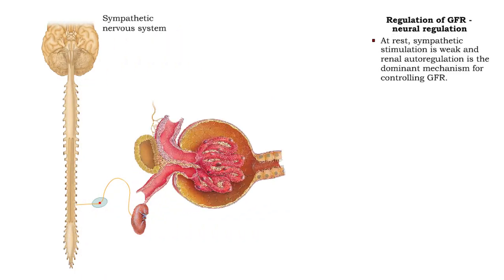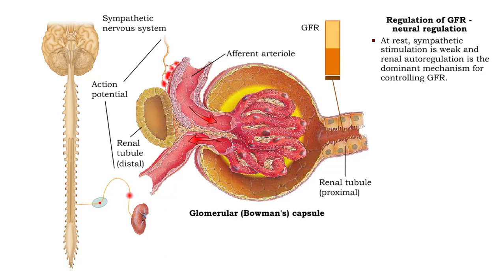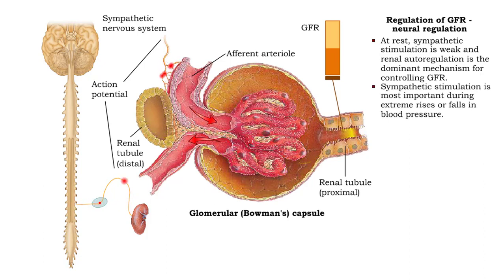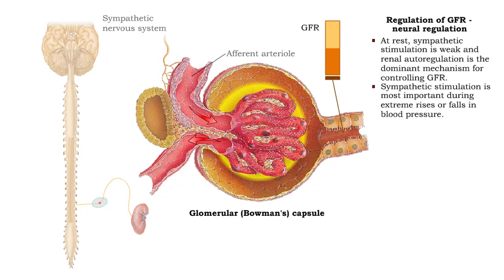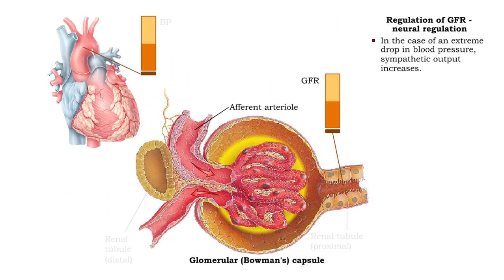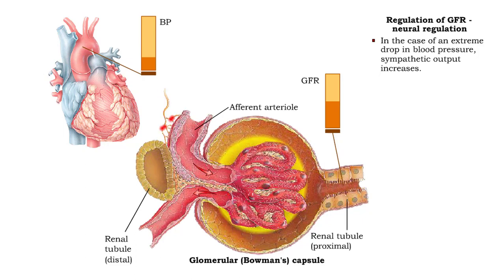At rest, sympathetic stimulation is weak and renal autoregulation is the dominant mechanism for controlling glomerular filtration rate. Sympathetic stimulation is most important during extreme rises or falls in blood pressure. In the case of an extreme drop in blood pressure, as occurs during hemorrhage, sympathetic output increases, having two effects. First,